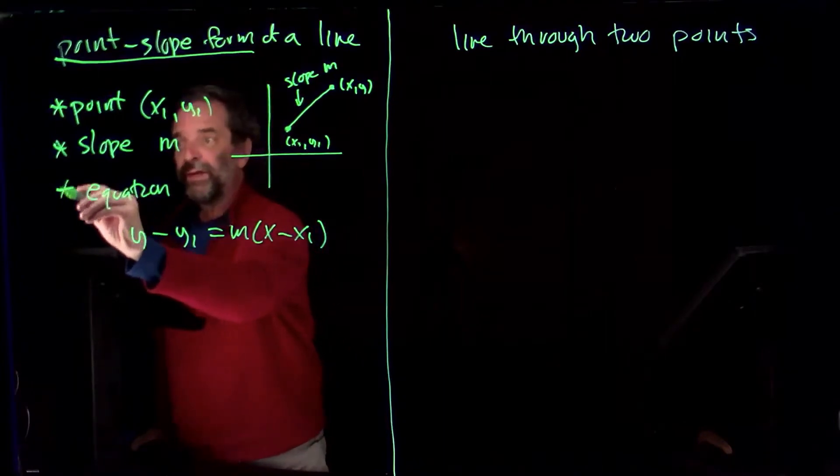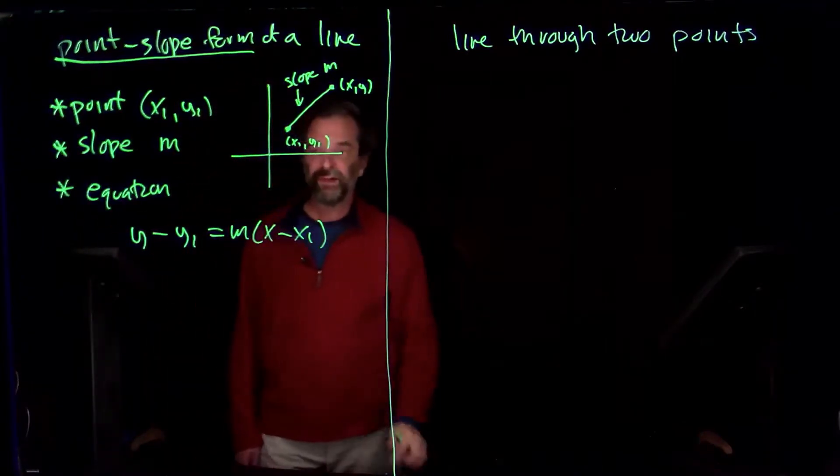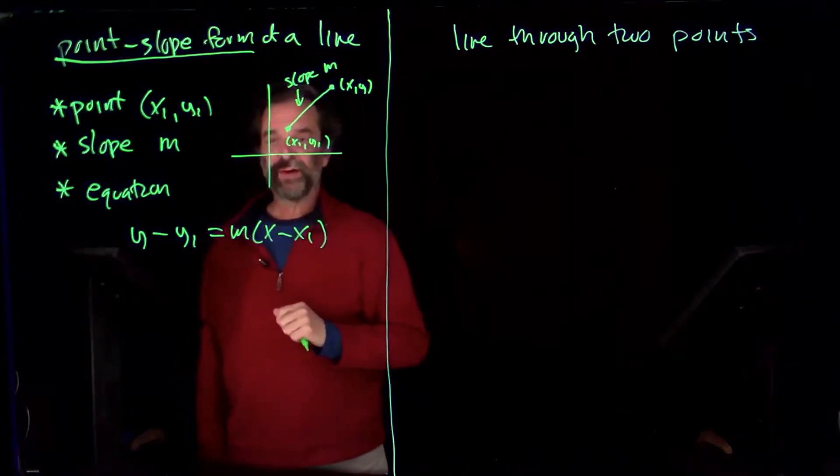And you'll get the equation: y minus the y-coordinate of the point is the slope times x minus the x-coordinate of the point.